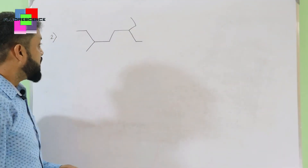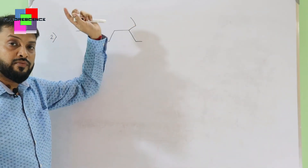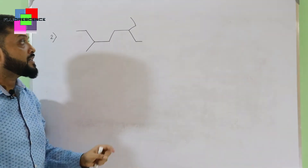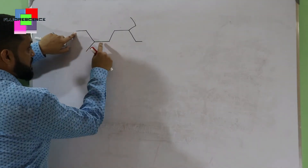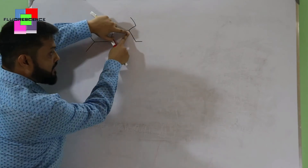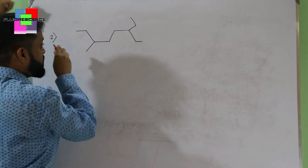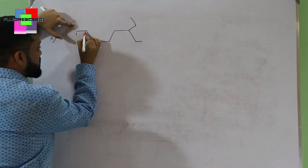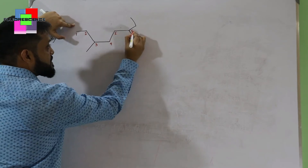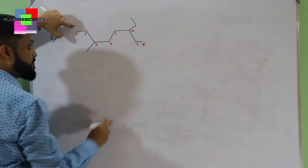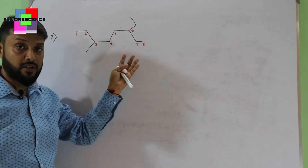Moving to the next example: first find the longest chain — 1, 2, 3, 4, 5, 6, 7, 8 — giving us 8 carbons. After finding the longest chain, find the locant positions. From the left, the first substitution starts at position 3; from the right side, the first substitution also starts at position 3. Since we have different substitutions — methyl on one side and a two-carbon ethyl group on the other — we need to decide which end to start from.